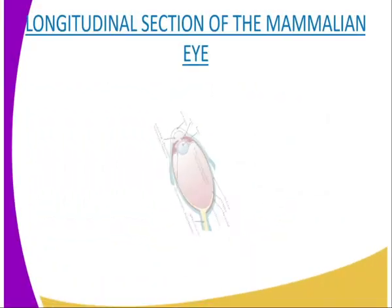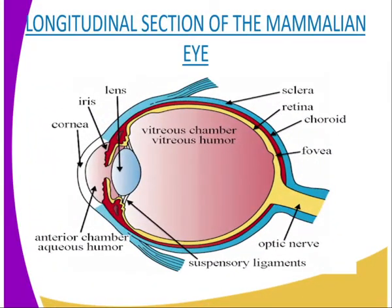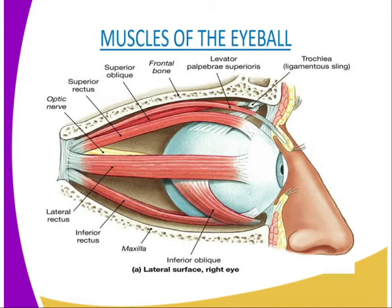We can have a diagrammatic section of the mammalian eye so that as I am explaining, you can see all the parts of the eye. The lateral rectus muscles move the eye left and right. Superior and inferior rectus muscles move the eye up and down, while the oblique muscles assist the eye in its up and down movement.